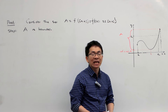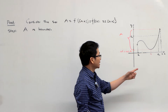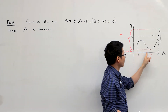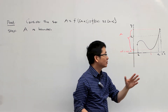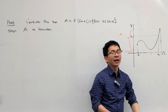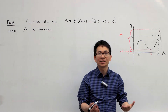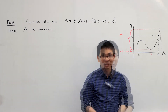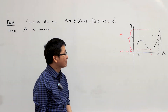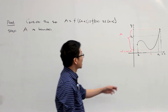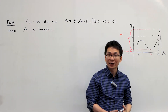Now I am going to give the detailed proof of this theorem. Our goal is to show that there exists some c in the closed interval from a to b such that f of c is the smallest function value on the interval a b, and there exists some d in this interval such that f of d is the largest function value on the interval a b. I will only focus on the case where there exists some c such that f of c is the smallest function value, and leave the second one as an exercise.